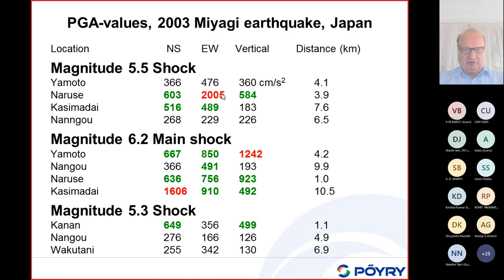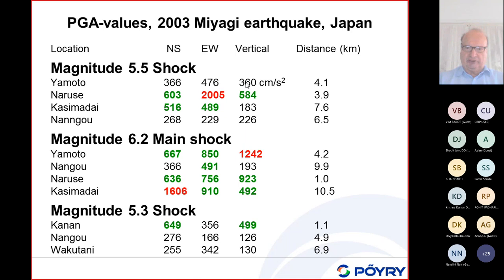These measurements were on soil, not rock. The main shock was magnitude 6.2. At another site 4 kilometers from the epicenter, 1.2 G vertical and 1.6 G horizontal were measured. An aftershock of magnitude 5.3 gave 0.65 G. If you record ground acceleration close to an earthquake fault, you can record very high accelerations — far higher than any accelerations typically considered in dam design.